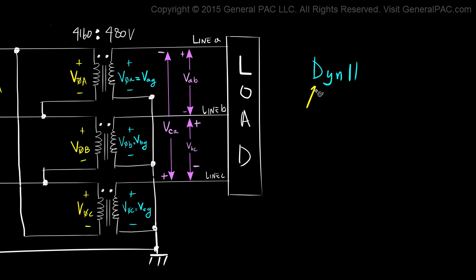The capital D tells us that the high voltage winding is connected in delta. The lower case Y tells us that the low voltage winding is connected in Y or star, same thing.